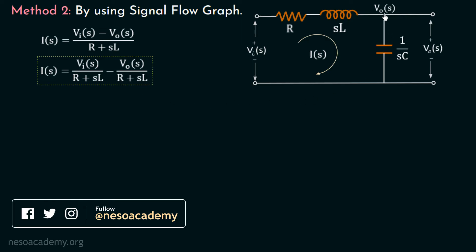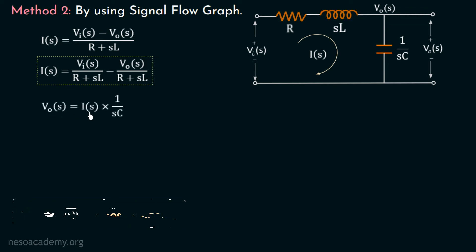Now we will calculate the node voltage. Vout(S) is the voltage drop across the capacitor. The voltage drop across any element equals the current through that element multiplied by its impedance. So Vout(S) equals I(S) multiplied with 1 over SC, since all three elements are in series and the impedance of the capacitor is 1 over SC. Hence, Vout(S) equals I(S) multiplied with 1 over SC. This is our second equation — the node voltage equation.